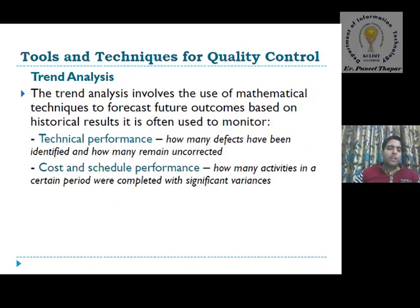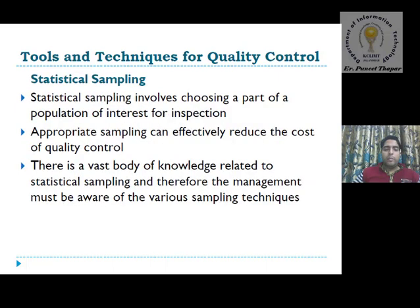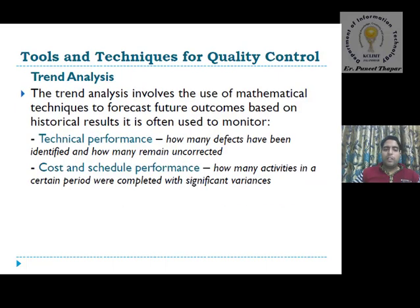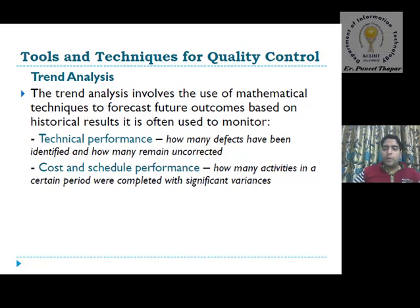Next is trend analysis, which involves the use of mathematical techniques to forecast future outcomes based on historical data. On the basis of historical improvement we can see what the current trends are — user requirements nowadays, technology trends nowadays — and on the basis of these trends we can deliver a qualitative product. This control method mechanism is adopted here.